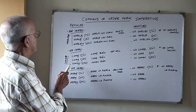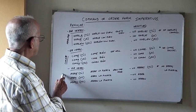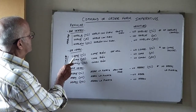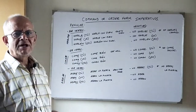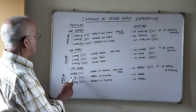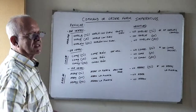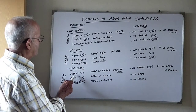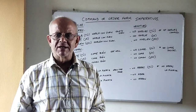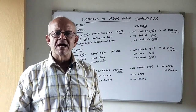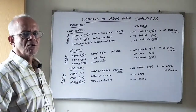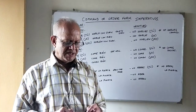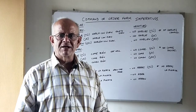IR verbs follow exactly the same pattern as ER verbs. We remove the R from the ending and replace the I with an E. So ABRIR, which means 'to open,' becomes ABRE in the tú formation — for example, ABRE LA PUERTA, meaning 'open the door.' In the usted form, we replace the E with an A: ABRA LA PUERTA. And for more than one person, we add the N: ABRAN LA PUERTA.